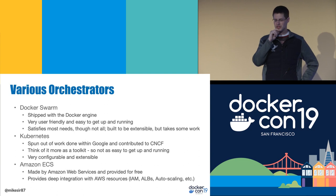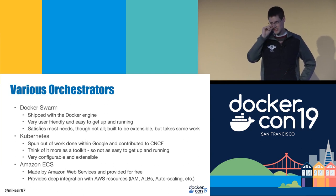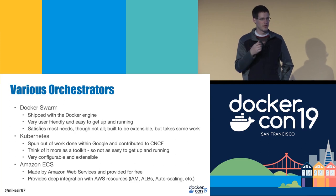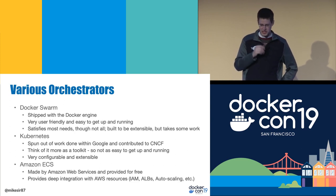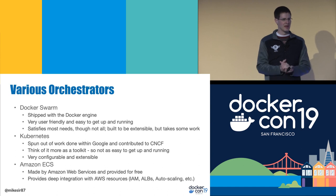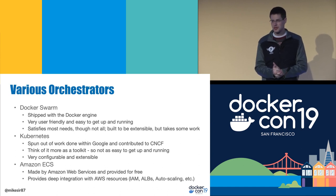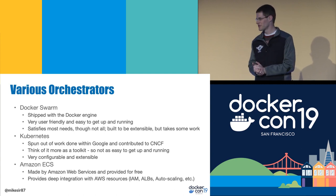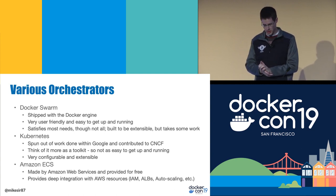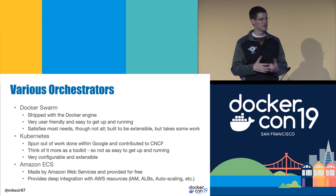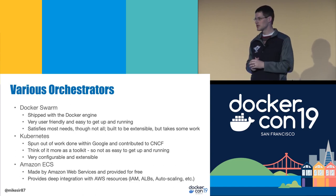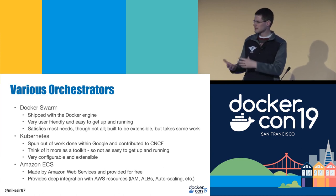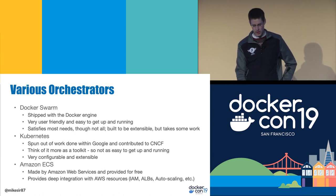The three orchestration options I'll hit on: Docker Swarm ships with the container engine — you install Docker, you get the ability to run Swarm. It's super user-friendly, easy to get up and going, and satisfies most needs. Kubernetes is super extensible but super complicated — that's why there are so many managed services for it. Amazon ECS is their Elastic Container Service with deep AWS integrations, and we use that quite a bit at Virginia Tech.